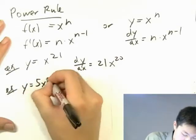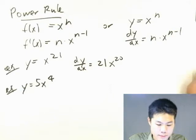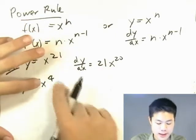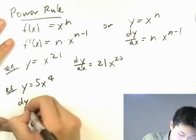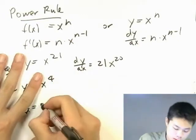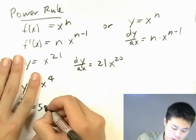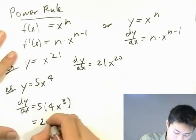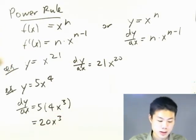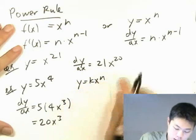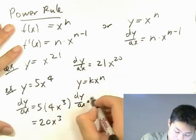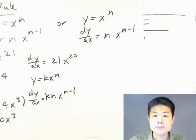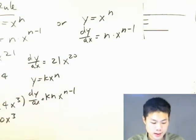Here's another example: y equals 5 times x to the 4th. Notice there's a coefficient — we simply pull it aside and take the derivative. So dy over dx: we leave the 5, bring the 4 down, giving 5 times 4 times x to the 3rd, which equals 20x cubed. So if y equals k times x to the nth, then dy over dx equals k times n times x to the n minus 1 — just keep the constant.